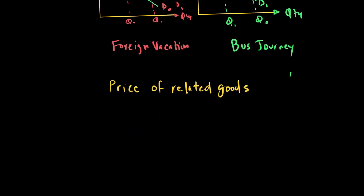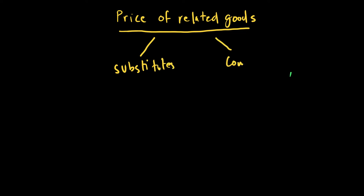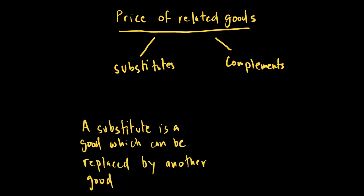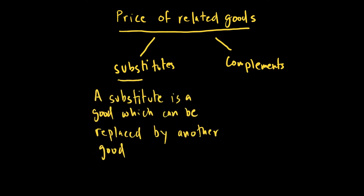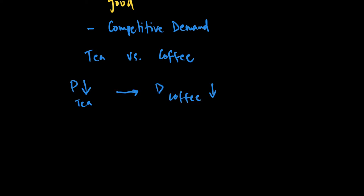Another important factor affecting demand is the price of related goods. Here we look at two kinds of goods — substitutes and complements. A substitute is a good that can be replaced by another good; in other words, it's a good in competitive demand. A good example is tea and coffee — coffee is a substitute for tea. Economic theory predicts that a fall in the price of tea will lead to a decrease in demand for its substitute, coffee.